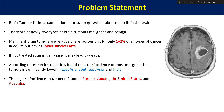The problem statement is that we have to do brain tumor identification using brain MRI images. You can see that this is the main MRI image. Before jumping to the actual brain tumor classification technique, we first need to understand what a brain tumor is. A brain tumor is basically the accumulation — or collection — of mass or growth of abnormal cells in the brain.